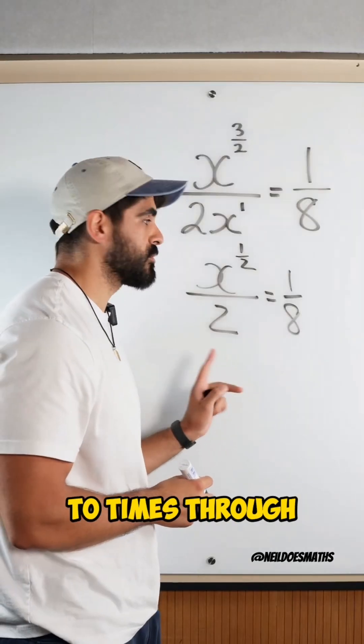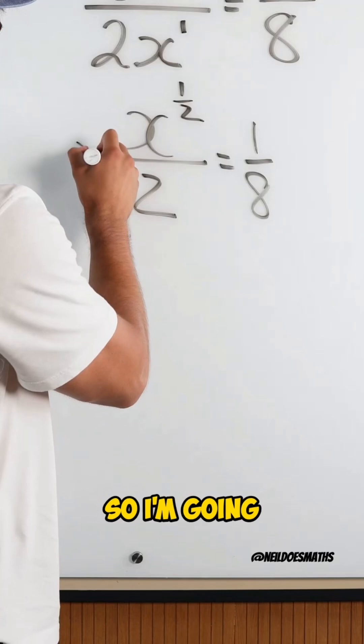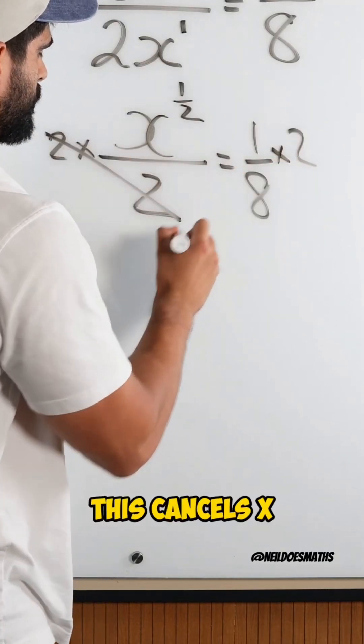Now I'm going to times 2 by 2. We're solving for x, right? So I'm going to double both sides. This cancels.